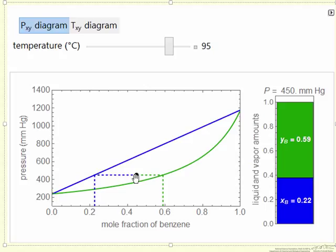We can separately change the location of the point we're interested in. We can move this point with a mouse, and then the corresponding mole fractions of the vapor and liquid, and the relative amounts, are indicated by this bar graph shown on the right.